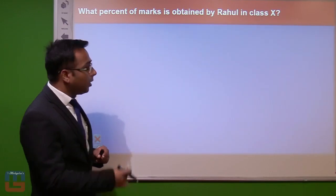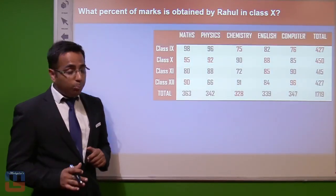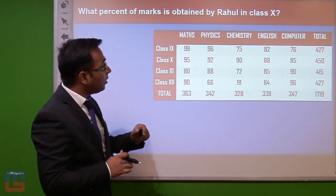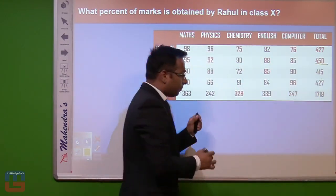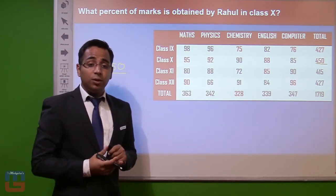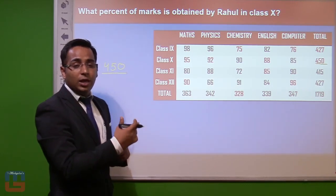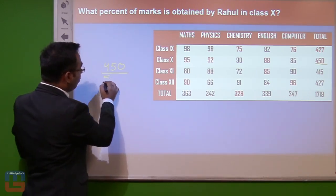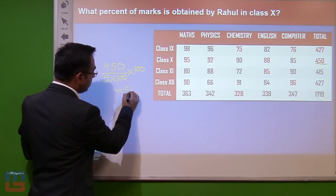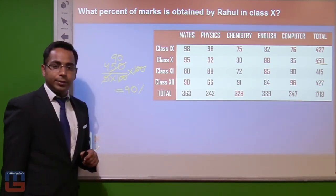Question 1: What percent of marks is obtained by Rahul in class 10? Rahul obtained 450 marks in class 10. Total maximum marks = 5 subjects × 100 = 500. Percentage = (450 ÷ 500) × 100 = 90%. The answer is 90 percent.